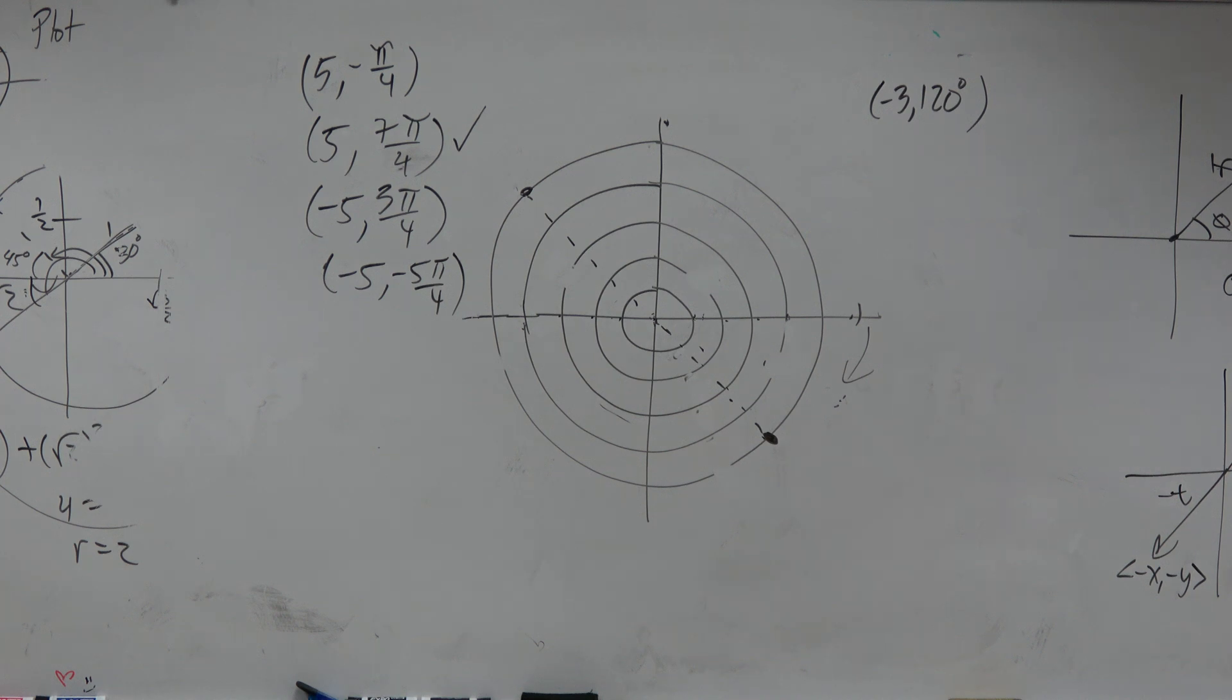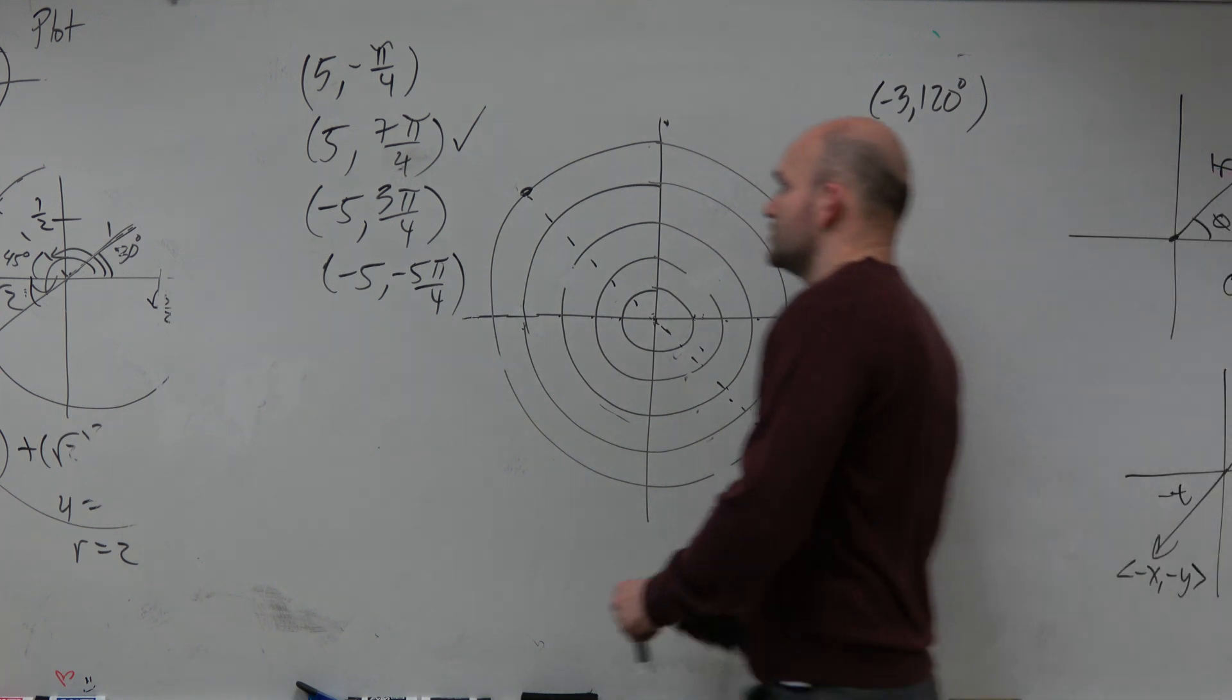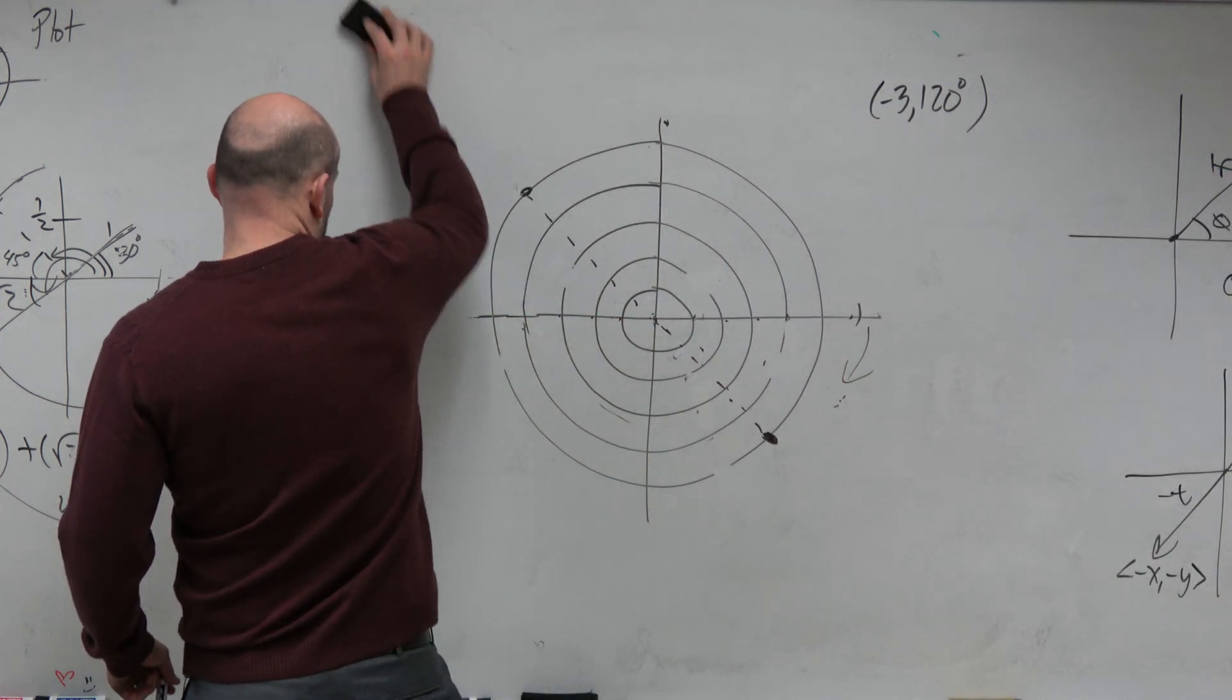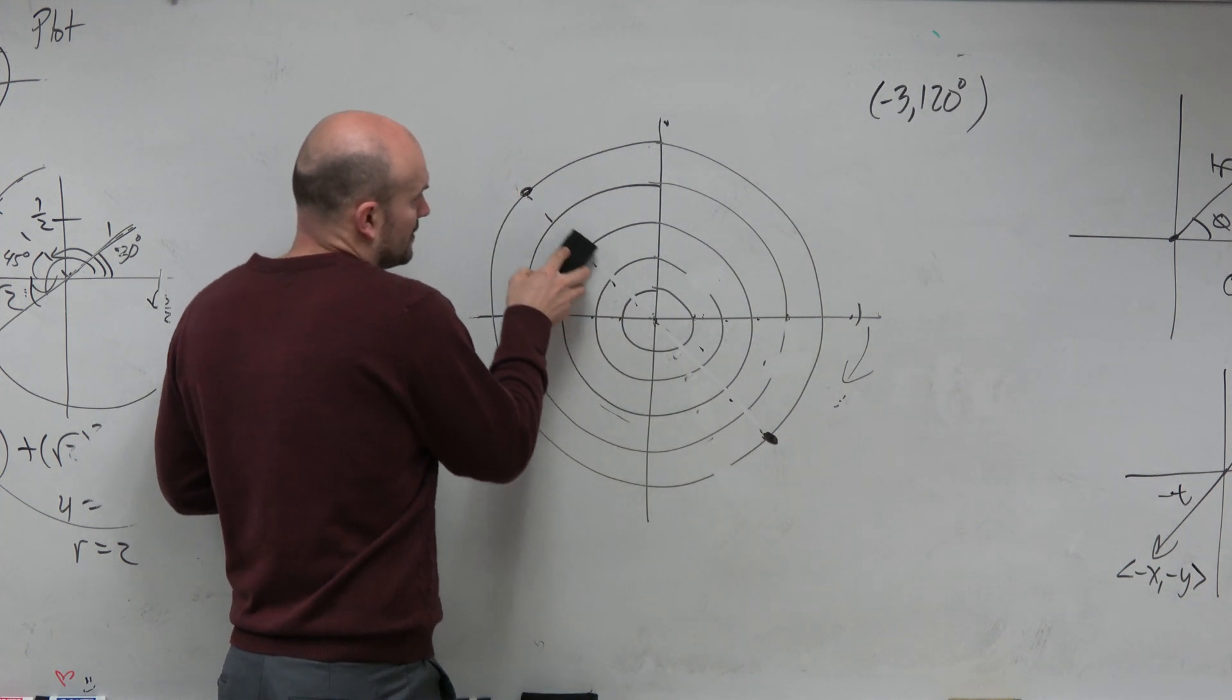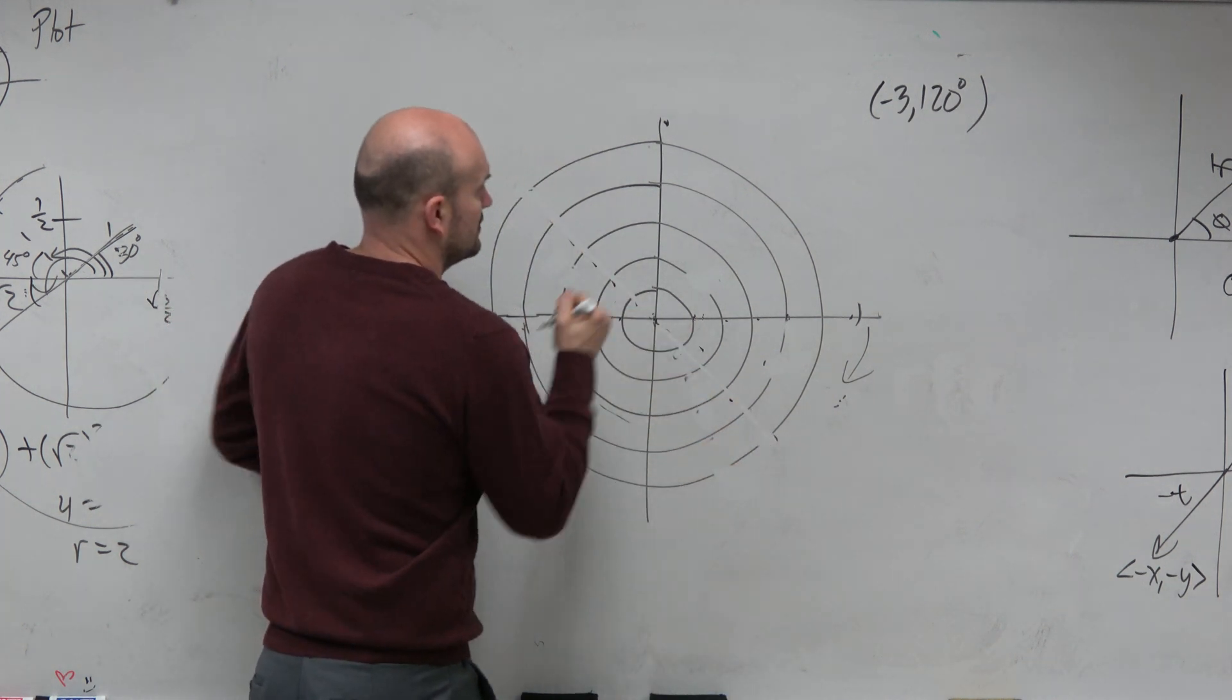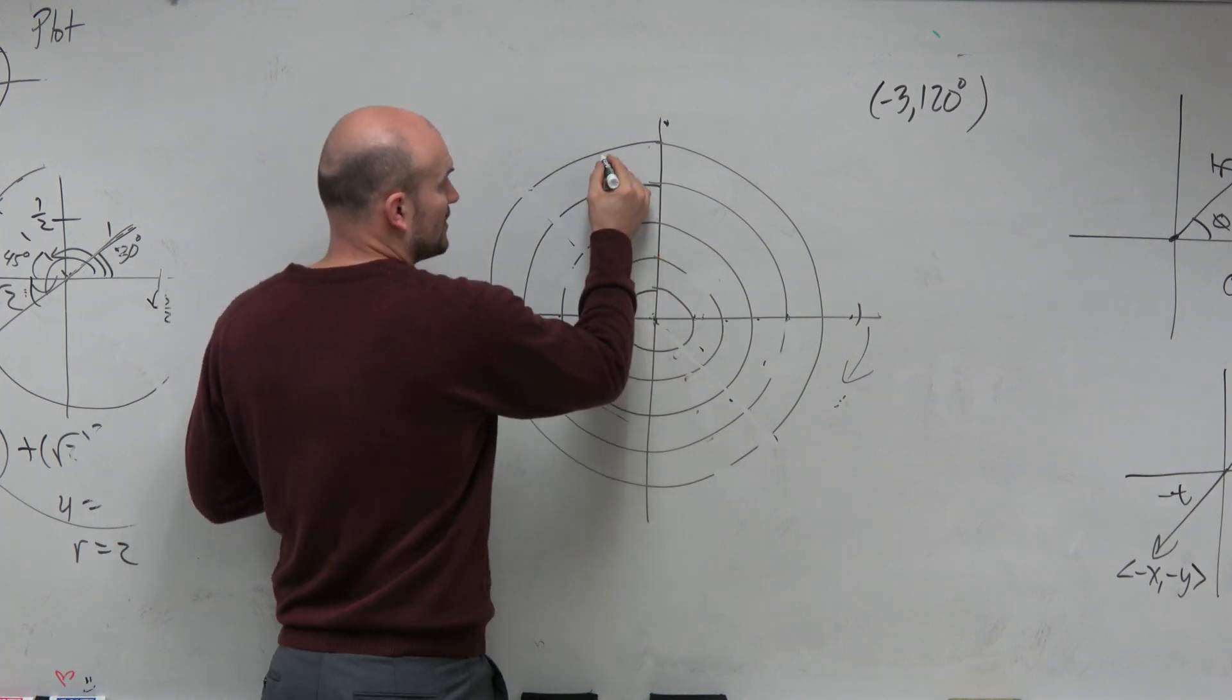That's a negative. So now what we have to do is understand where exactly is this point. The way that I like to do this is I like to graph the angle first. So I'm going to say, all right, 120 degrees. Here's 60, here's 120. So that's going to be right there.